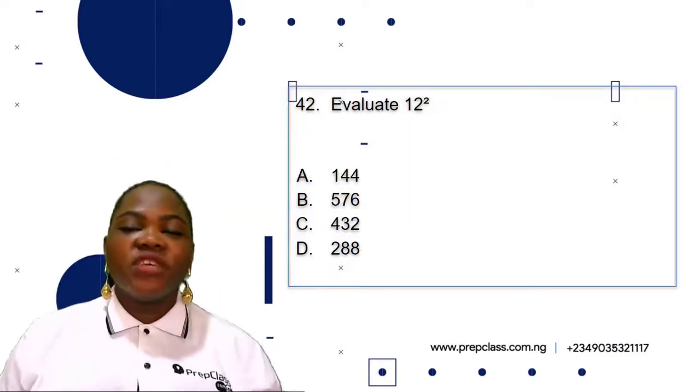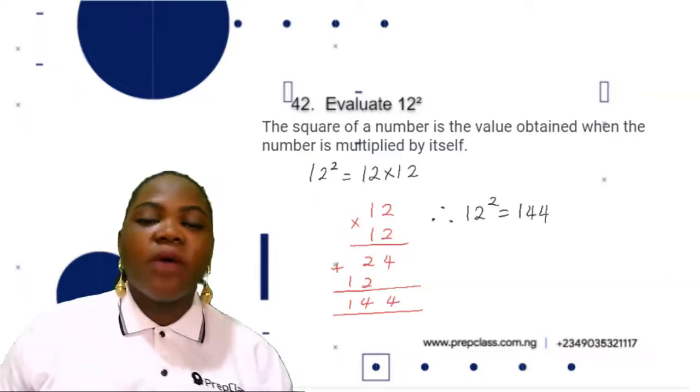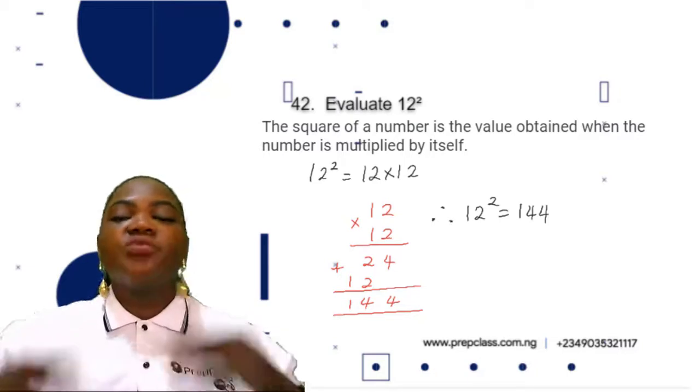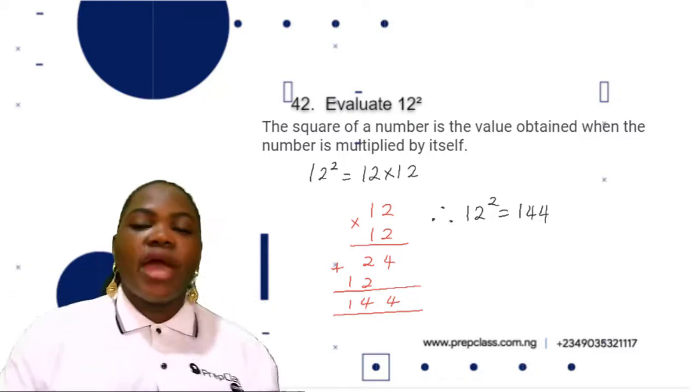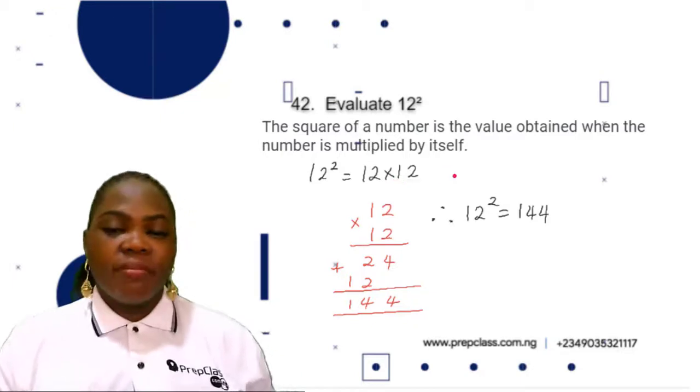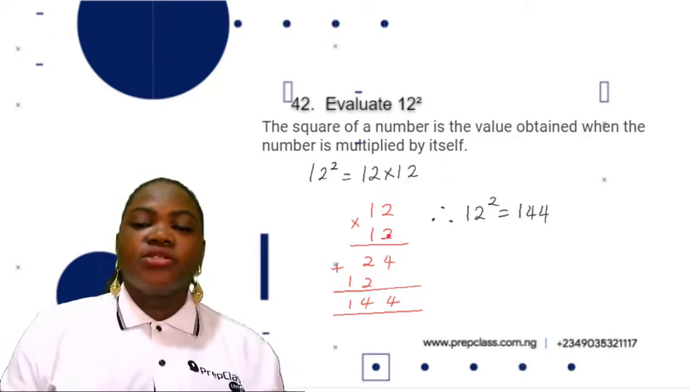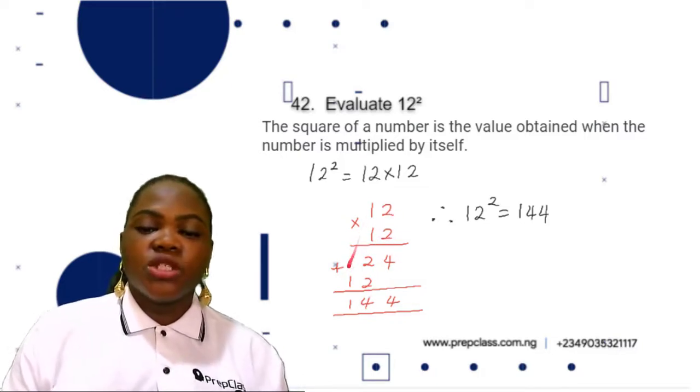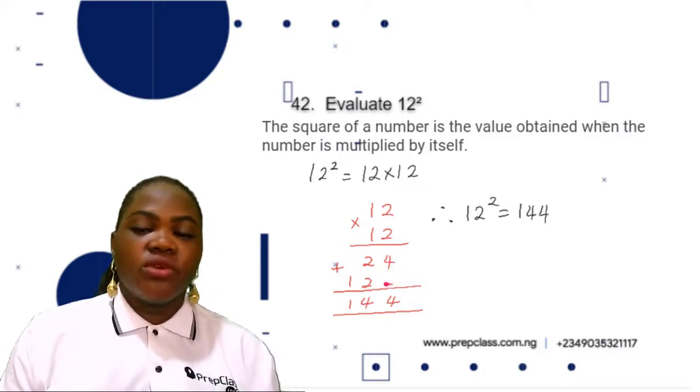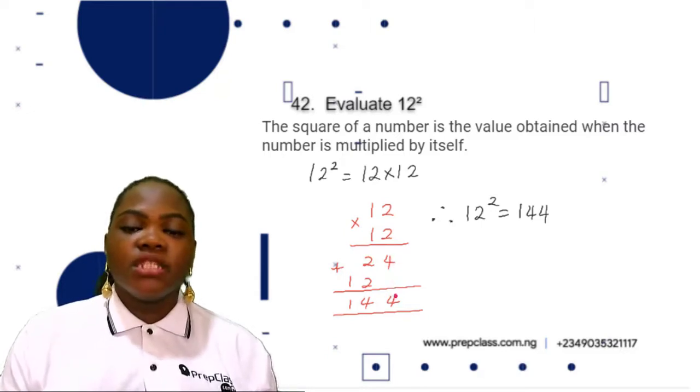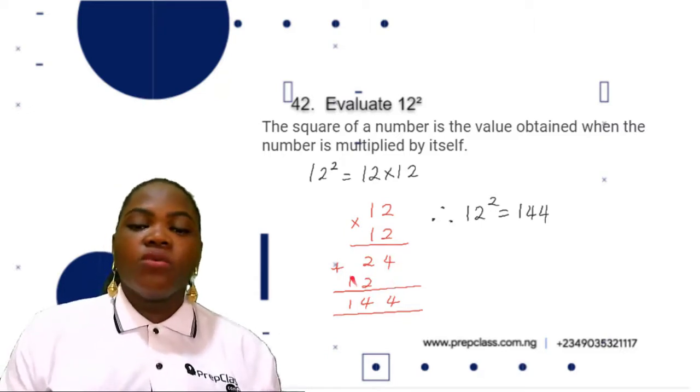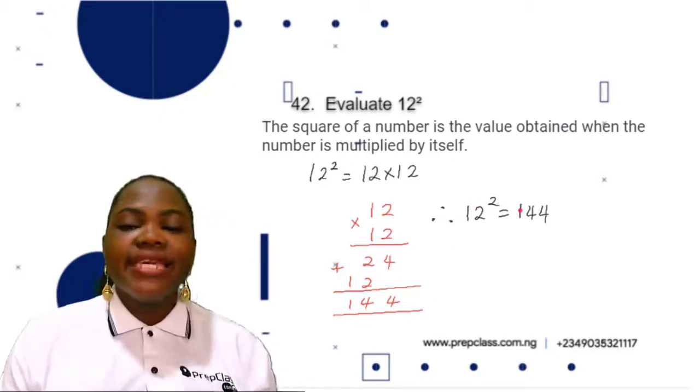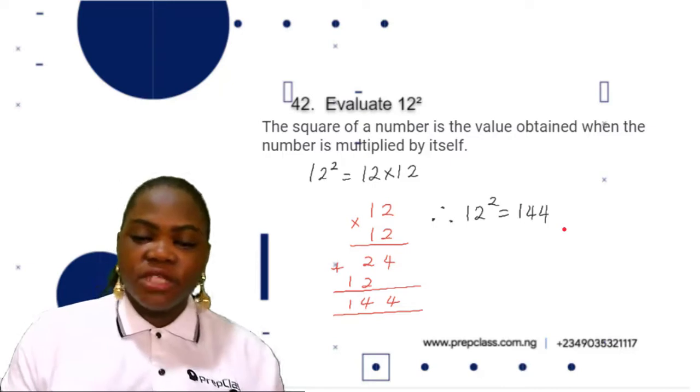Question 42 says evaluate 12 squared. The square of a number is the value obtained when the number is multiplied by itself. So 12 squared means 12 multiplied by 12. 2 times 2 is 4, 2 times 1 is 2, 1 times 2 is 2, 1 times 1 is 1. Adding the partial products: 4 plus 2 plus 2 is 4, 2 plus 2 is 4, 1 is 1, giving us 144. So 12 squared is 144. The correct option is option A, 144.